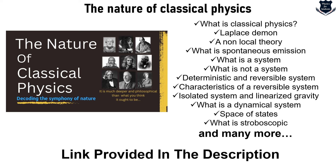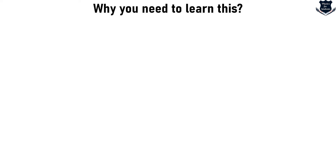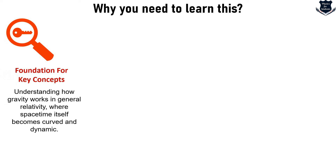Once we understand the nature of classical physics, the immediate next step is understanding how general theory of relativity evolved — it didn't come out of the blue. Step number two is the evolution of special relativity. The foundations for key concepts — the entire mathematics of general relativity, space-time curvature, etc. — are first dealt with in special relativity. Special relativity gets generalized from a non-accelerated to an accelerated system, which is why we need to understand it.